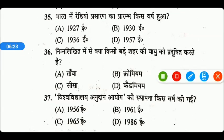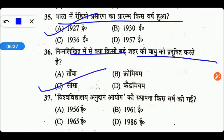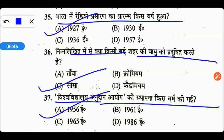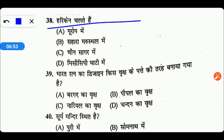भारत में रेडियो प्रसारण का प्रारम्भ किस वर्ष हुआ था? वह हुआ था 1927 ईस्वी में। निम्नलिखित में से क्या किसी बड़े शहर की वायु को प्रदूषित करते हैं? सबसे अधिक प्रदूषित करता है सीसा (Lead)। विश्वविद्यालय अनुदान आयोग की स्थापना किस वर्ष हुई थी? इसकी स्थापना हुई थी 1956 ईस्वी में, Option A सही उत्तर है। हरिकेन कहाँ चलते हैं? वो चलते हैं Mississippi घाटी में, Option D सही है। भारत रत्न का डिजाइन किस वर्ष के पत्ते की तरह बनाया गया है? इसका सही उत्तर है Option B — पीपल के पत्ते की तरह।